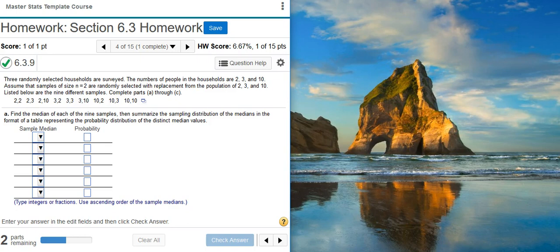Part A says, find the median of each of the 9 samples, then summarize the sampling distribution of the medians in the format of a table representing the probability distribution of the distinct median values.